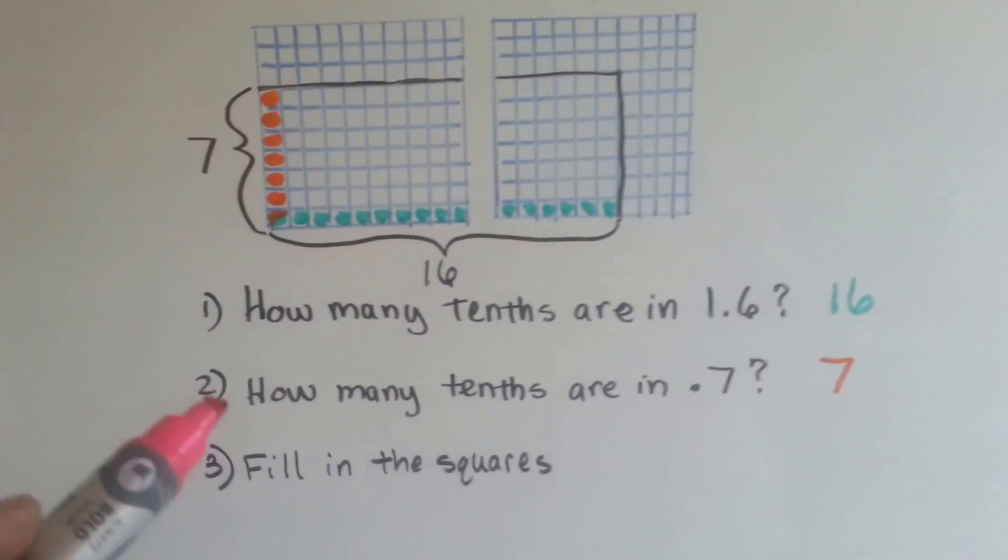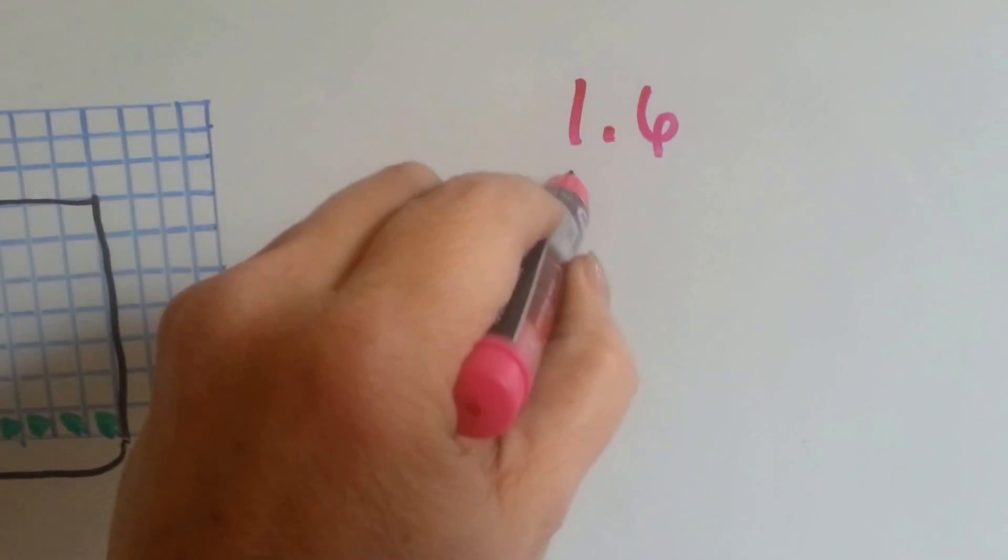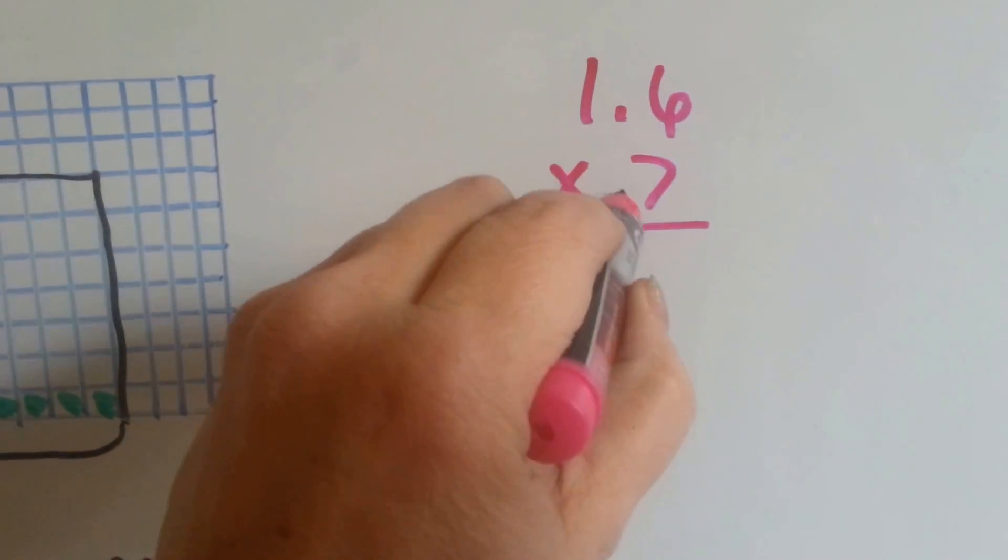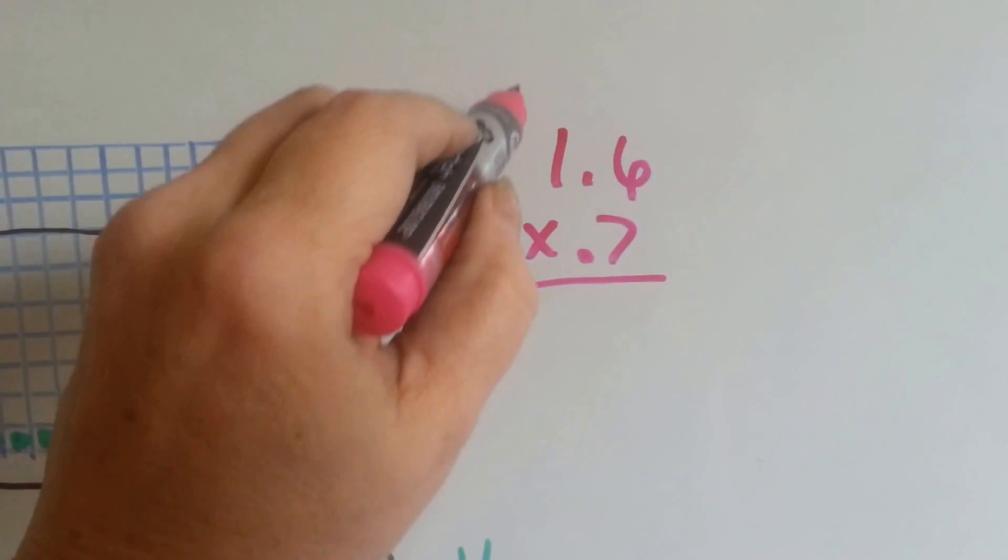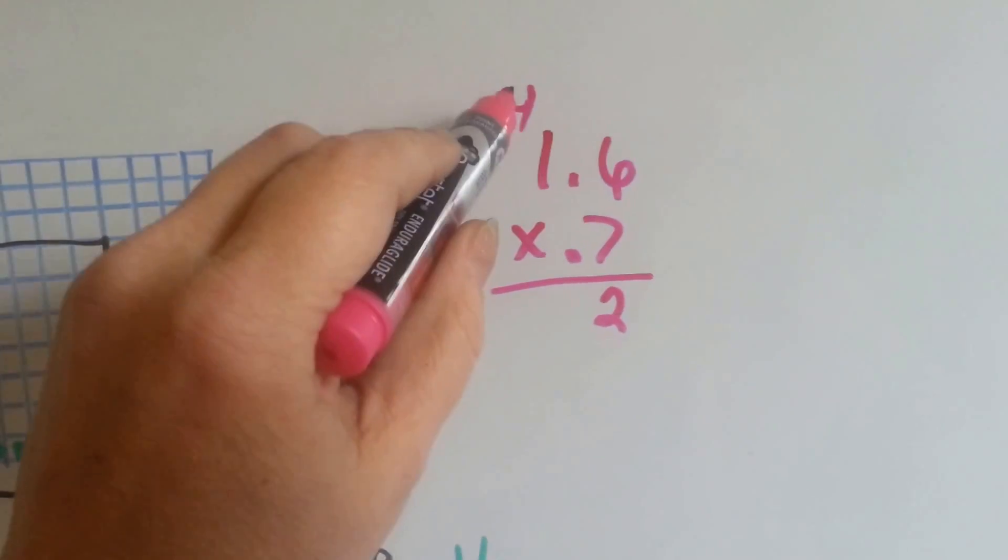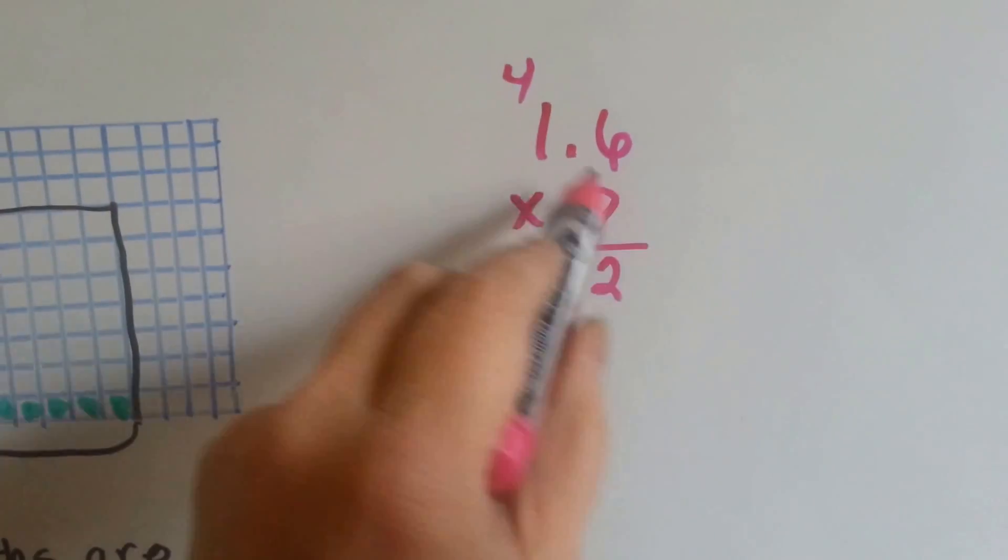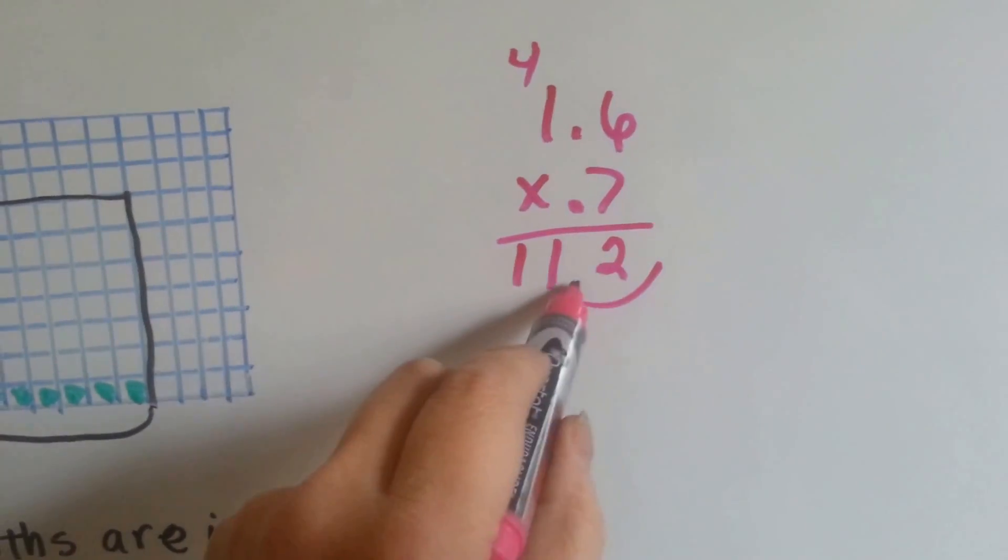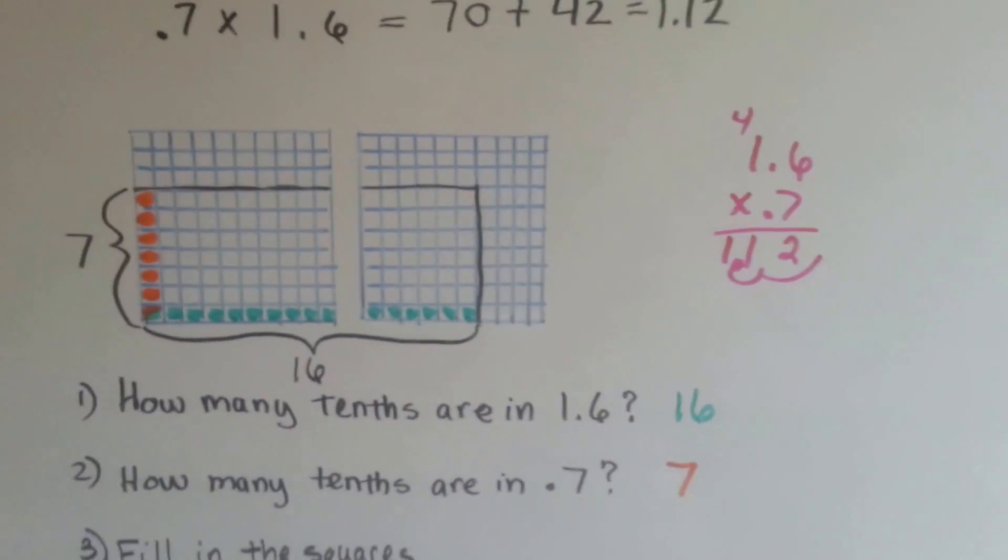If we were to do it stacked to find the answer, we would do 1.6 times 7 tenths, okay? Remember there's tenths. 7 times 6 is 42. We carry the 4 and put the 2 down. 7 times 1 is 7 plus 4 is 11. And how many times did we hop? 1, 2. 1, 2. Our answer is 1 and 12 hundredths.